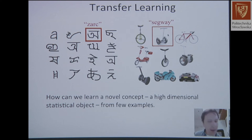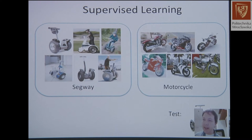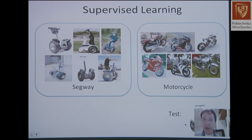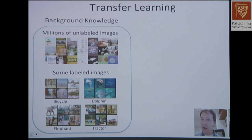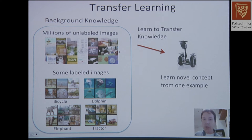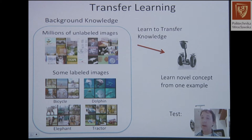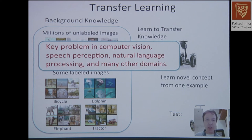It's a very exciting area of research. The standard paradigm is supervised learning: I show you thousands of examples of Segways and motorcycles and test you. What about this setup: first I give you millions of unlabeled images from the web, then I give you some labeled examples of dolphins, bicycles, and tractors. Can you take this background knowledge and learn a new concept from just a single example, even if you've never seen Segways or only seen them without labels? That's a key problem in vision, speech, and NLP.